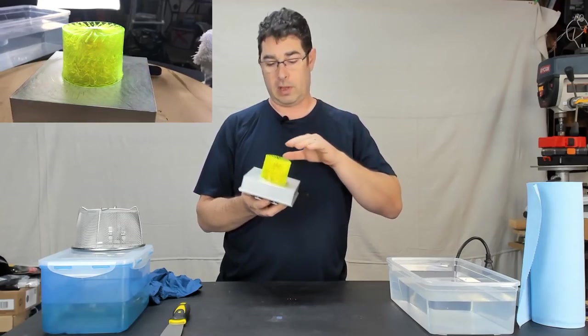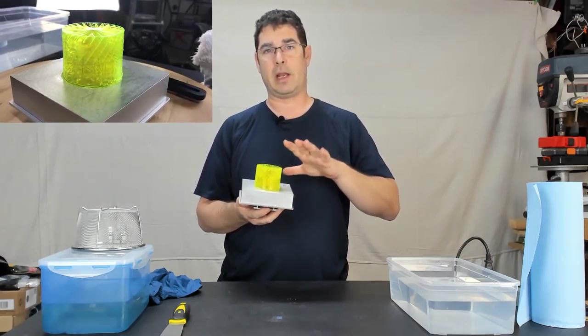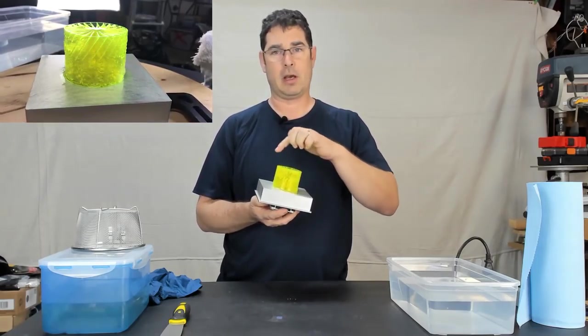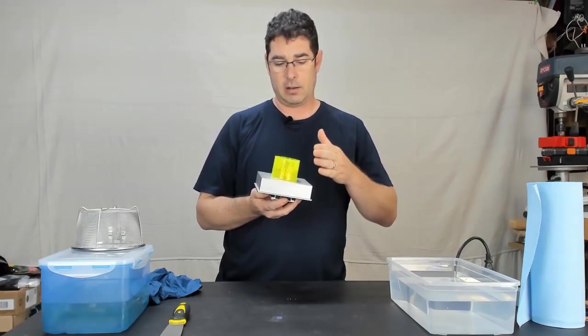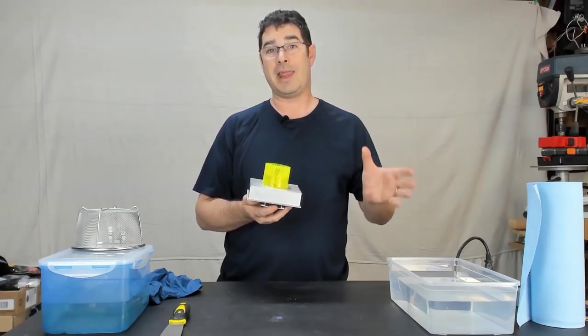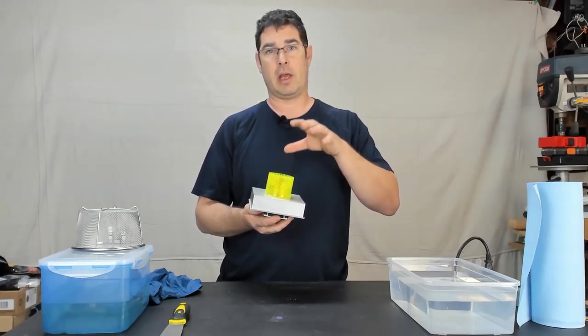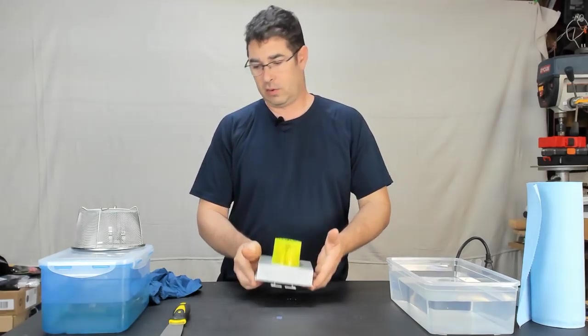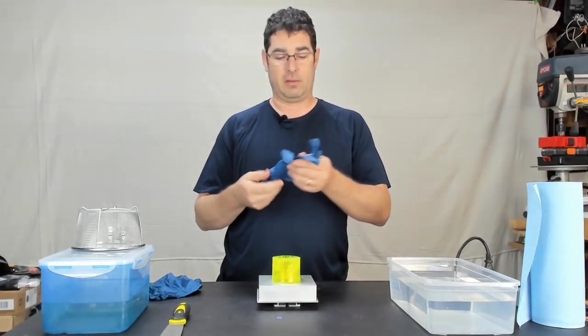So my hope is that we can get it off of the build plate and get it rinsed off, carefully cut away the shield and then using the softness of it, style the hair the way that we want it and then put it into the curing oven and hopefully it'll stay that way. So let's see if we can glove up and make this work.